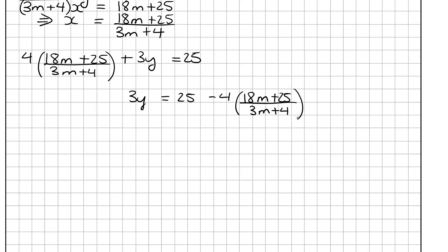I'm going to get a common denominator now for the right-hand side, and my common denominator is going to be 3m plus 4. So that means I need 25 times 3m plus 4, because my bottom line is going to be 3m plus 4.